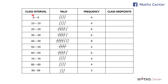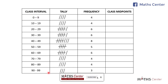The question gave us the intervals we are supposed to use: 0 to 9, 10 to 19, 20 to 29, and so on — 30 to 39, 40 to 49, 50 to 59, 60 to 69, 70 to 79, 80 to 89, and 90 to 99. When you find the differences between the upper and lower class limits, you realize that all of them give you 9.